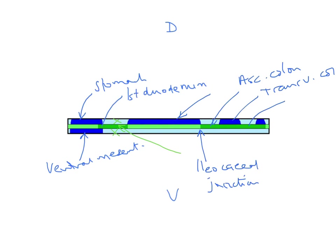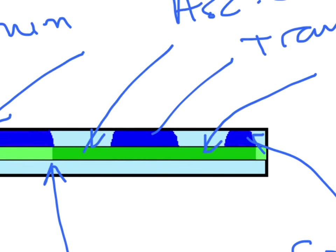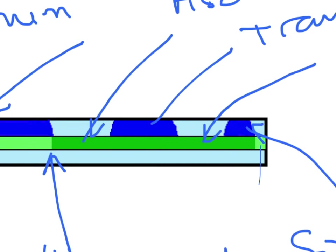The next retroperitoneal structure is the descending colon, and this little bit with its mesentery is going to be the sigmoid colon. The sigmoid colon then progresses further to become continuous with the rectum. The last light green area represents the rectum, and there is no mesentery attached to it, so the rectum is a retroperitoneal structure.